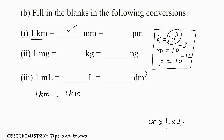For removing kilometer, I am going to write a fraction such that kilometer is on the denominator. On the numerator, since kilo is 10 raised to 3, I write 10 raised to 3 meter on the numerator and kilometer on the denominator. So: 1 km × (10³ meter / kilometer). The kilometer cancels out, leaving us with 10³ meter.